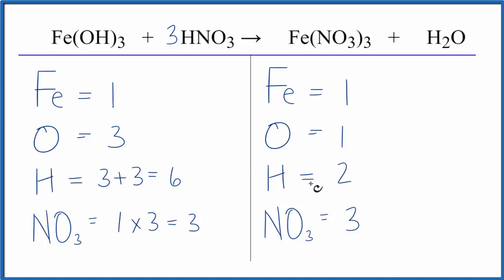Let's fix the hydrogens here. That might even solve the oxygens. We have two here and six here. So if we put a coefficient of three in front of the H2O, two times three for the hydrogens, that's six. And then for the oxygens, we have one times three, and that does it.